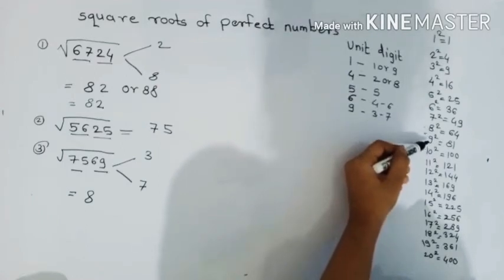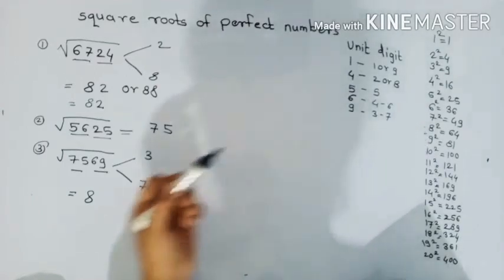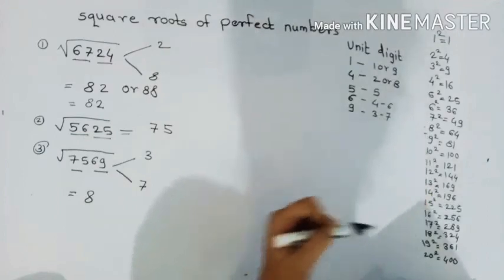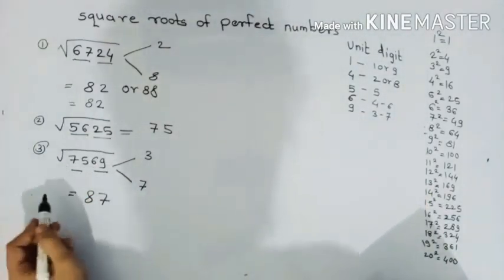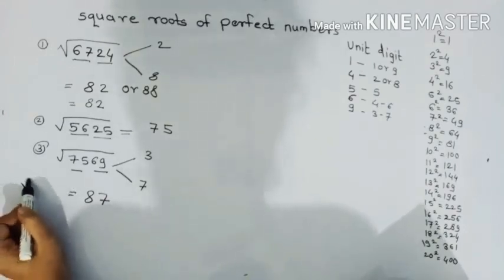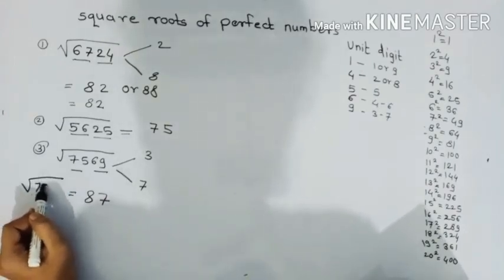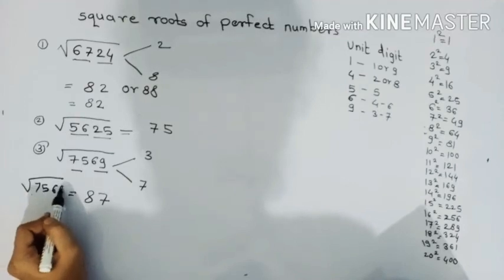64 or 81, which is more than 75? So our answer will be 7. So we have left, the square root of 7569 is equal to 87.